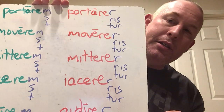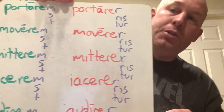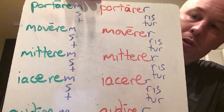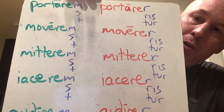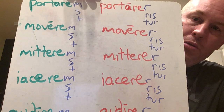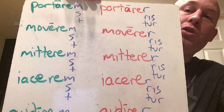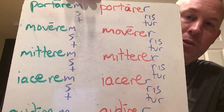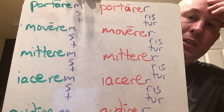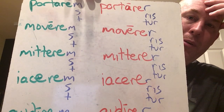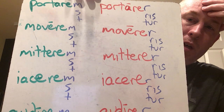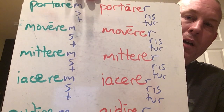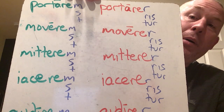When you're doing the passives: portarer, portareris, portaretur — aris, tur, mur, mini, ntur. So movere — movereris, moveretur. You're going to get into some fun stuff where it's like movereminī.